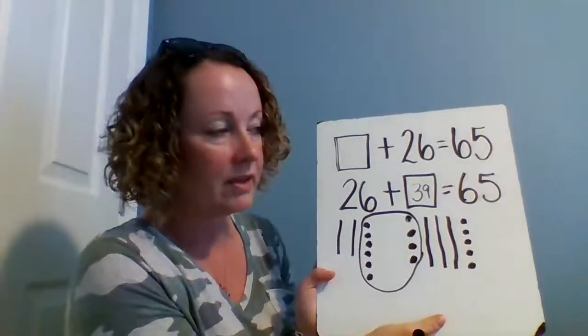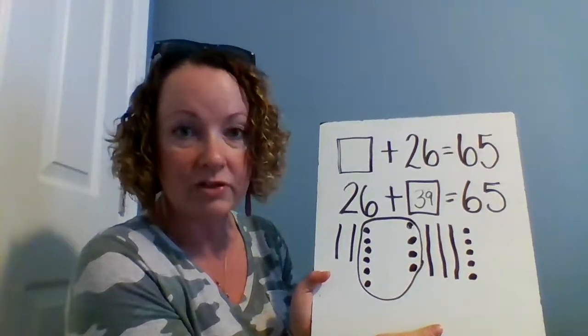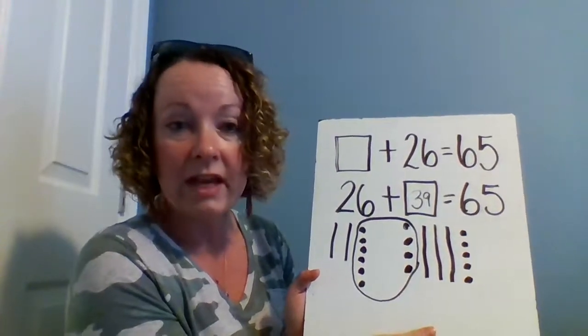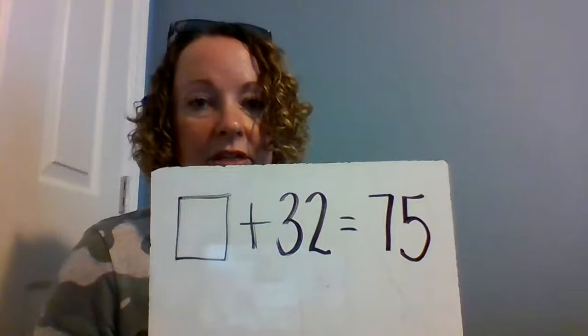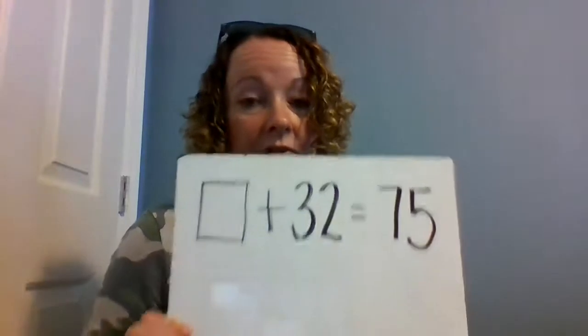Now I'm going to give you one to try on your own. I'm just going to flash it up. I'm going to trust you to write it down and give it a try. And if you'd like to send me a copy of your answer and how you solved the problem, I would love to see your work. All right. Last one: box plus 32 equals 75. Box plus 32 equals 75. All right, write it down, solve it.